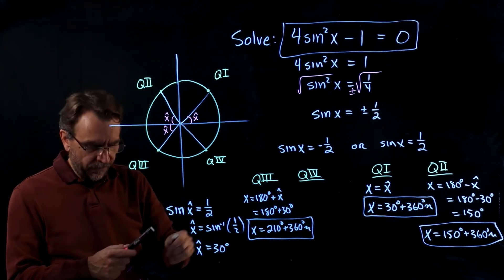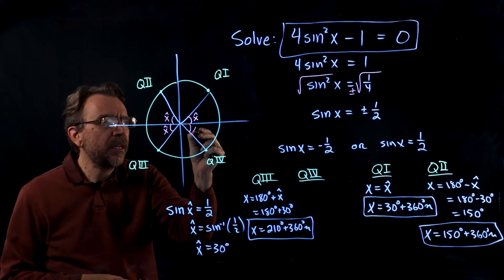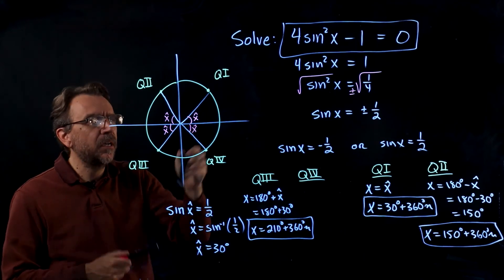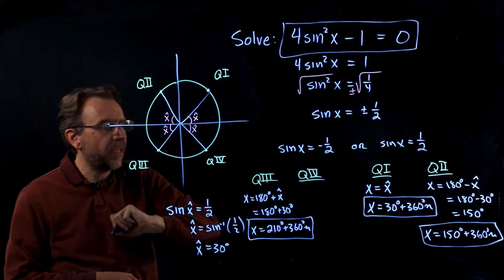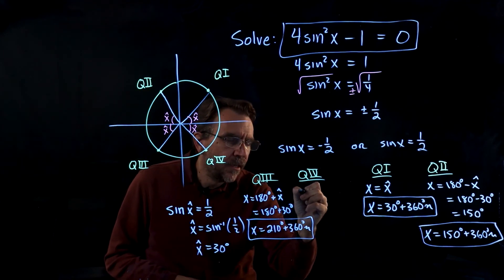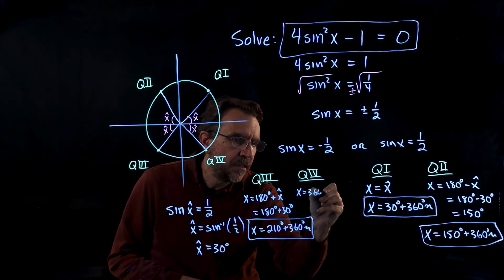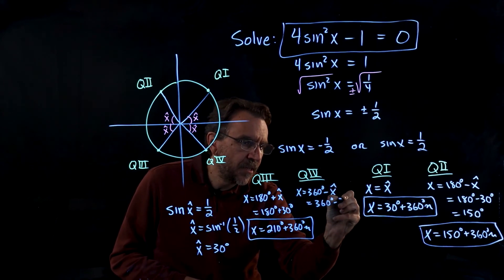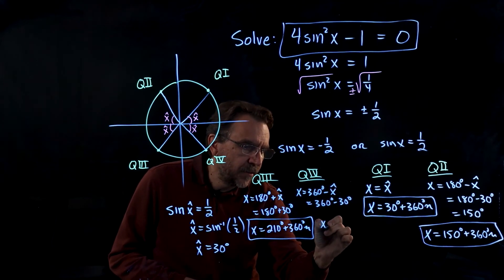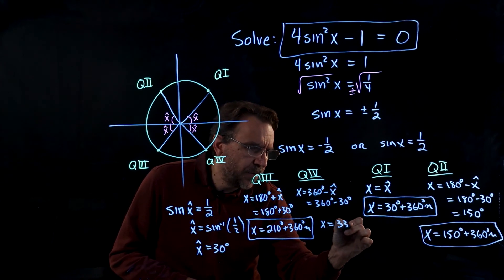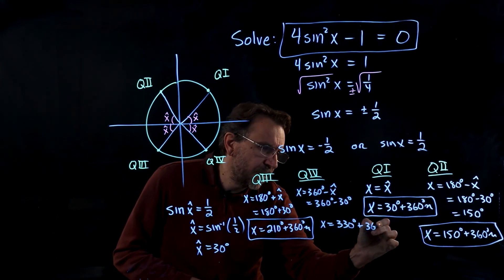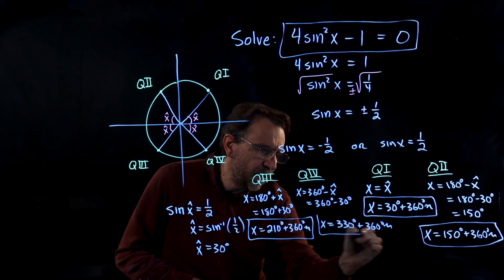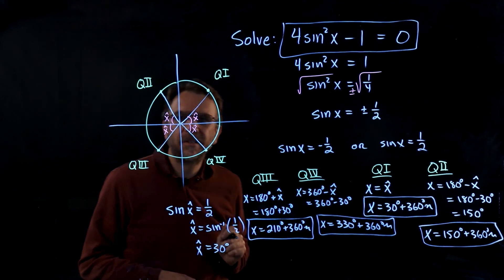Now in q4, the reference angle is right here. So to get the angle that I want, I'll take 360 degrees minus that reference angle. So x equals 360 degrees minus the x hat, 360 degrees minus 30 degrees. So x equals 330 degrees plus 360 degrees n. Infinitely many answers, co-terminal in q4.